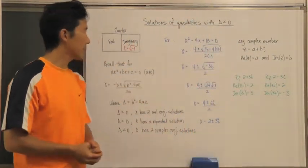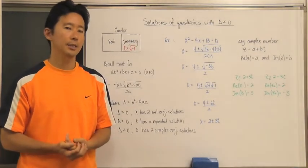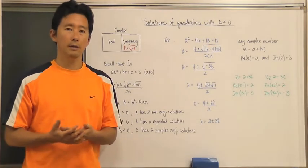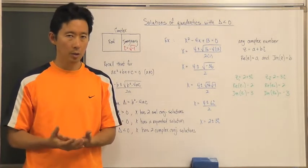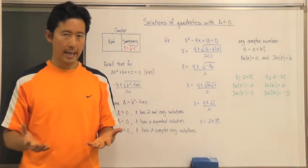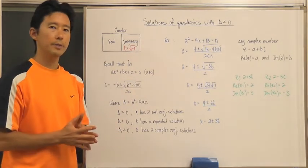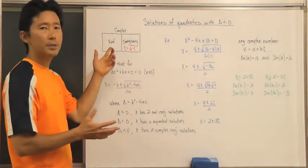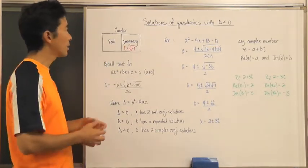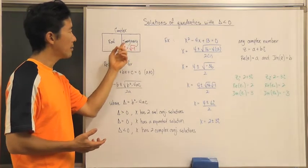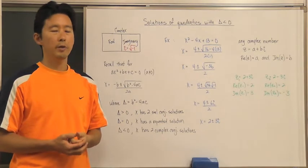Let's take a look at solutions of quadratics with the discriminant being less than zero. We're going to be introducing what are called complex numbers. When we look at complex numbers, the main thing to examine is the number set itself. We know what the real number set involves, and now we're going to have something called the imaginary numbers, which are based upon the imaginary unit i.